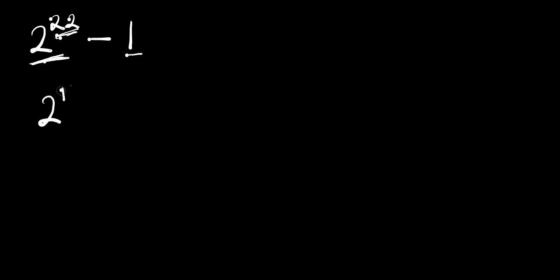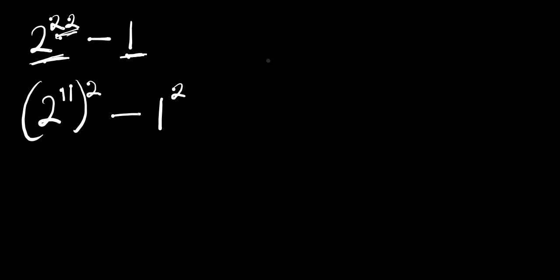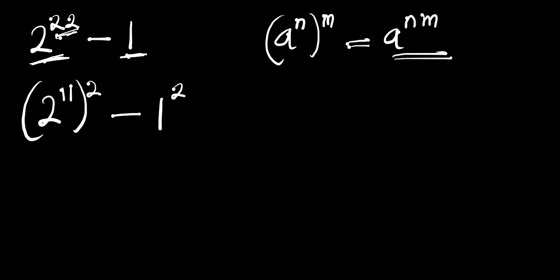We rewrite 2 to the power of 22 as 2 to the power of 11, all to the power of 2, and instead of 1 we can have 1 to the power of 2. We are applying the identity: (a^n)^m = a^(n×m), because multiplying 11 by 2 gives 22, and 1 to the power of 2 is still 1.